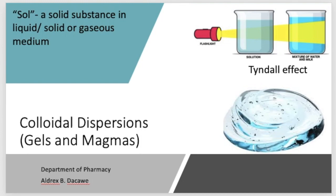For today, we will be talking about colloidal dispersions — or gels and magmas — as part of our post-laboratory discussion for Experiment Number 11. Gels and magmas are considered colloidal dispersions because they contain particles of colloidal dimension. Many of the various types of colloidal dispersions have been given appropriate names.